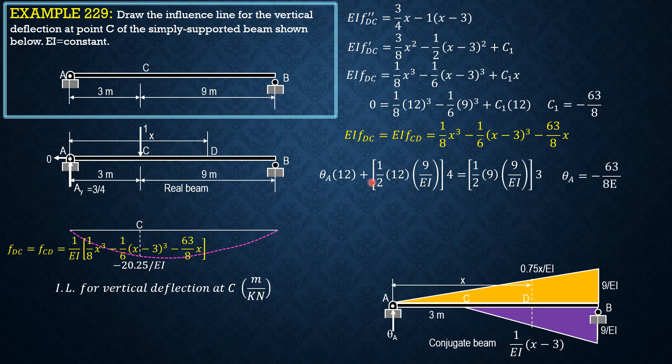Solving for theta A, theta A is negative 63 over 8 EI. We check here because C sub 1 over EI is the slope at A.